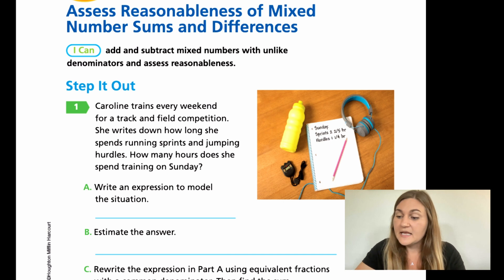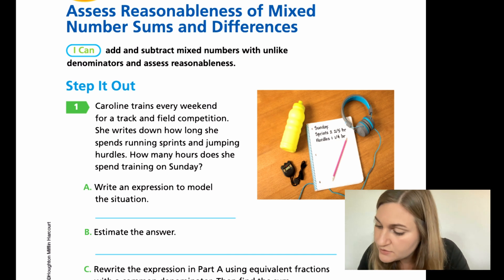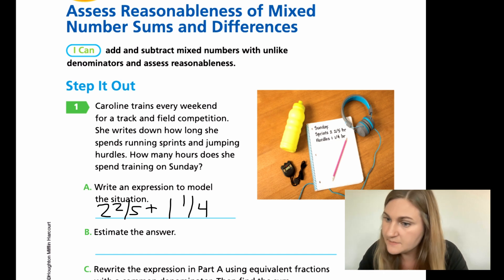For A, it says write an expression to model the situation. So if we want to know how many hours she spends training total, that means adding. So we're going to be adding those two numbers together. The 2 and 2/5 added together with my 1 and 1/4. That's my expression.